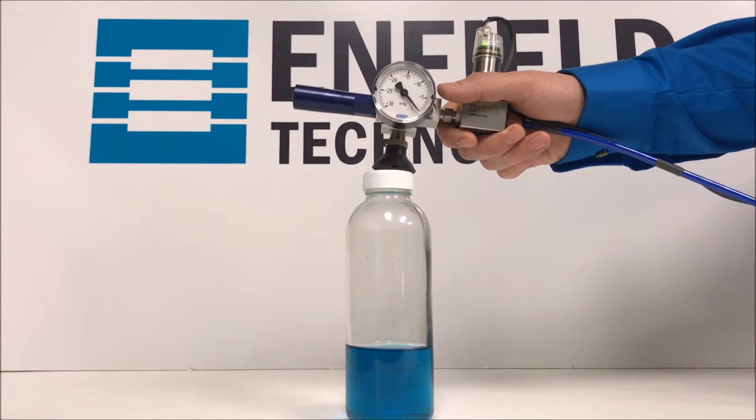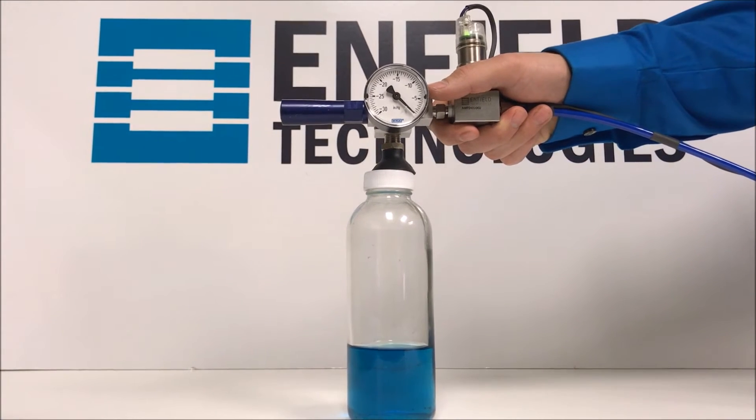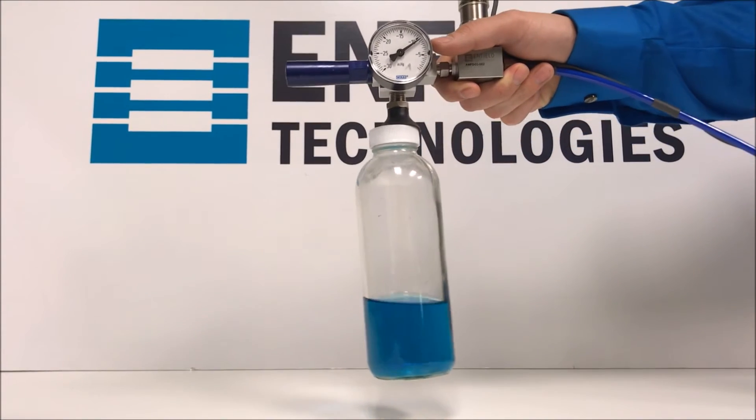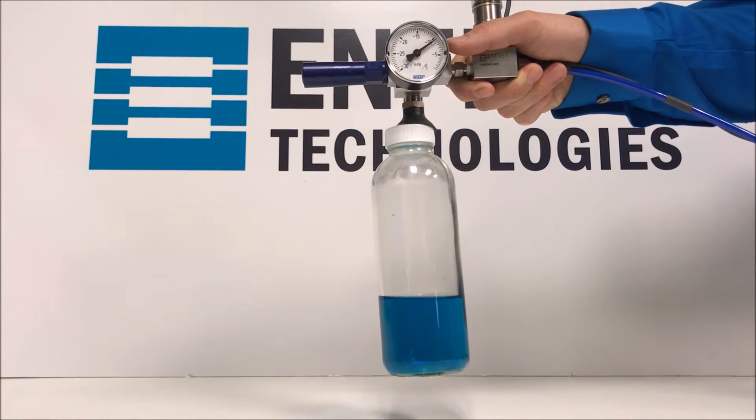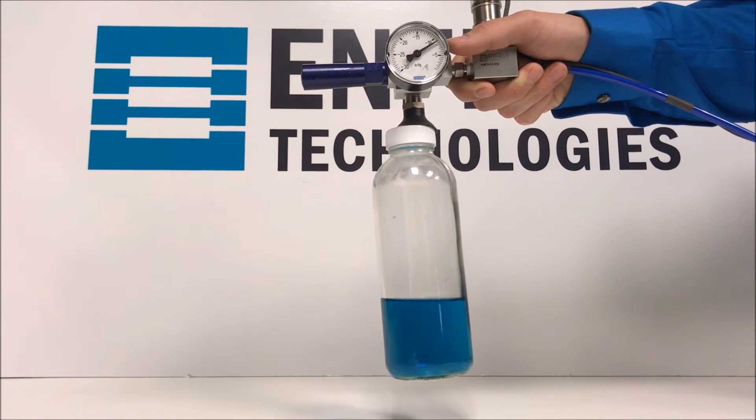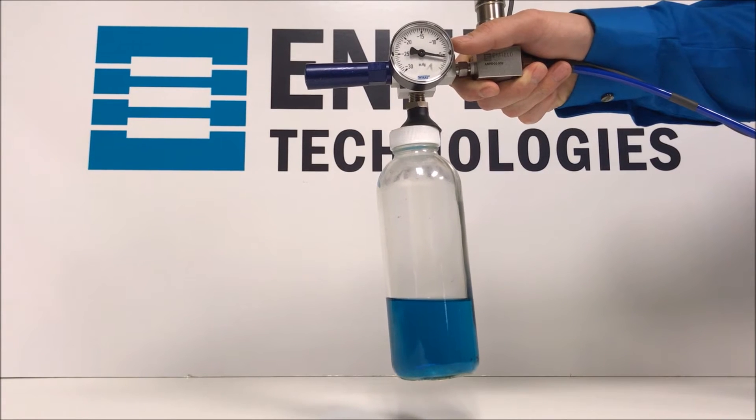To start this demonstration, we will show lifting a glass bottle filled partially with water. As you can see from the vacuum gauge, we are able to lift the bottle with a quick burst of air and then reduce air consumption once it has been secured.